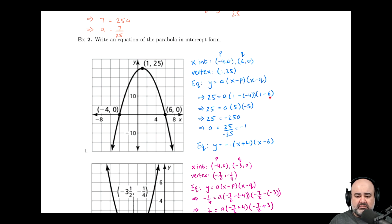So now it's just some arithmetic cleanup. Negative times a negative is positive, so here we'll have 1 plus 4, which is 5. Here we'll have 1 minus 6, which is negative 5. 25 comes along, a comes along. This is just the cleanup of 1 minus a negative 4. This is a cleanup of 1 minus 6.